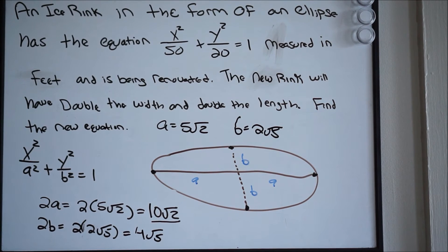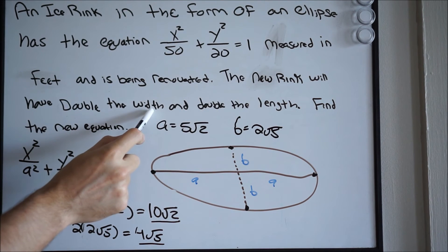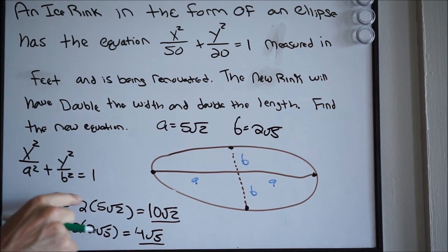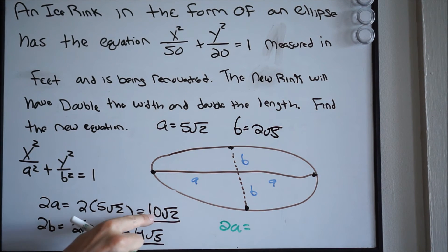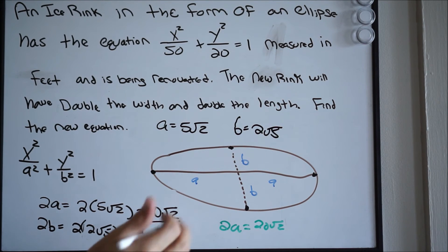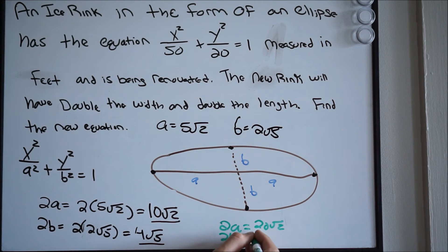Knowing the original dimensions, we can now find the new dimensions of the rink. The problem says the new rink will have double the width and double the length — so we just multiply both by 2. My new width: 2 times 10 square root of 2 equals 20 square root of 2. My new length: 2 times 4 square root of 5 equals 8 square root of 5.